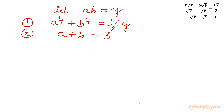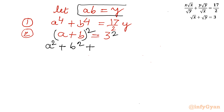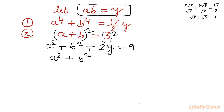Now I'll consider equation 2 and square both sides. Squaring a + b = 3 gives a² + b² + 2ab on the left. Since ab = y, this becomes a² + b² + 2y = 9. Therefore a² + b² = 9 − 2y.